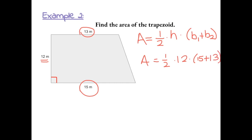Using order of operations, first we simplify what's inside the parentheses: 15 plus 13 gives us 28. Now we bring everything else down — area equals one-half times 12 times 28.